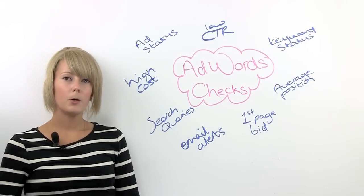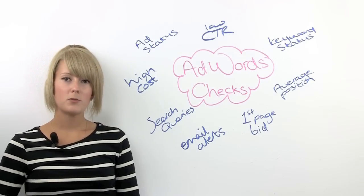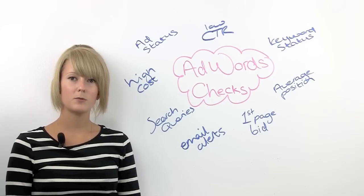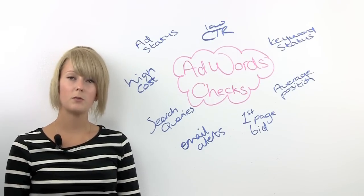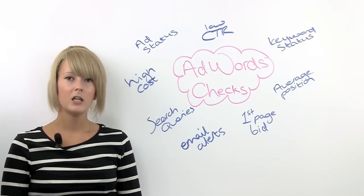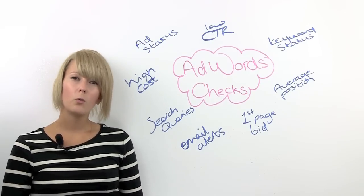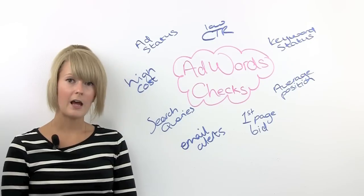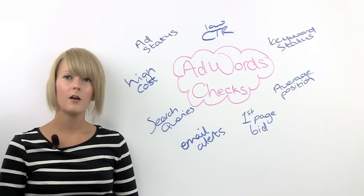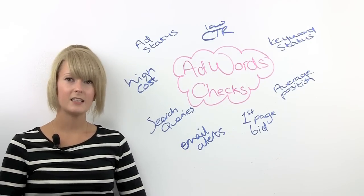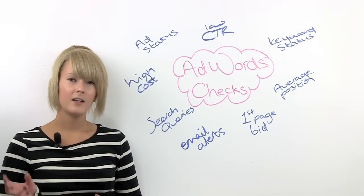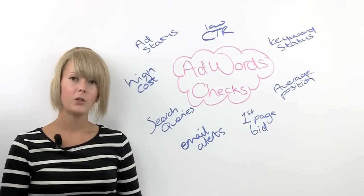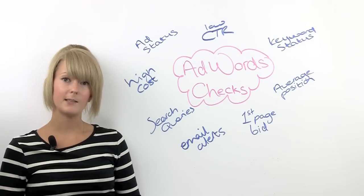Sometimes keywords are below Google's first page bid estimate, meaning they might not be able to achieve the average position they should be getting, and this isn't always picked up in your average position checks. So you need to filter by status and select anything that's below Google's first page bid estimate, and then increase the bids.